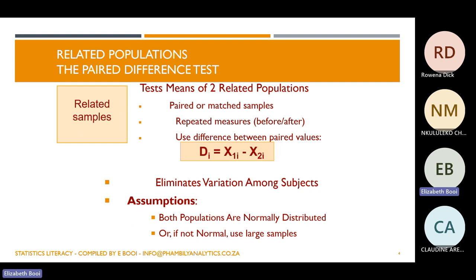For related samples, we will have to test if the two populations are related. We're going to be using the mean, and the sample needs to be paired or matched. The measures are going to be repeated — you do it before and then test again after. Because of the before and after from the same group, we need to calculate the difference to get one value and eliminate any variations amongst the subjects.